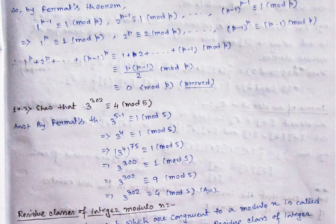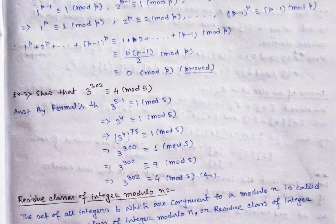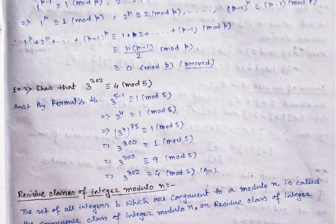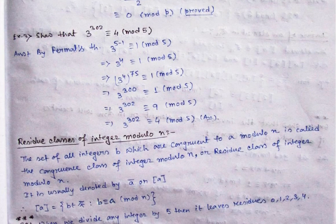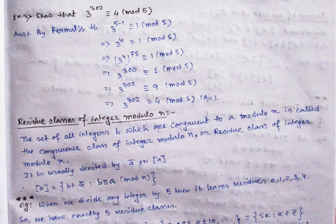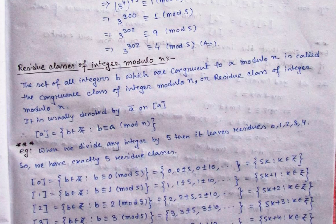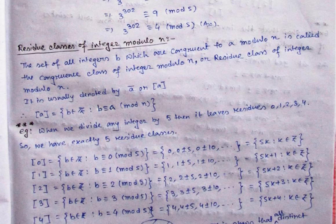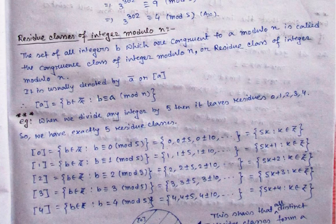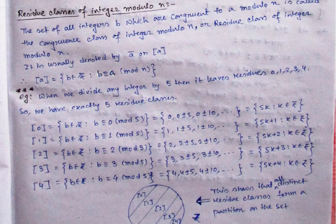So this is how this problem is solved here — check it and you will understand how to do it. Now we come to the residue class of integers modulo M, which is a very important topic that we need to understand well. So let's first take the definition, and then I will explain it.